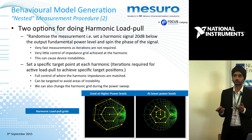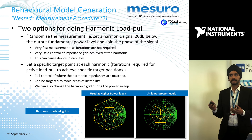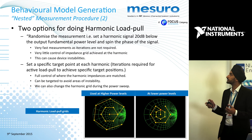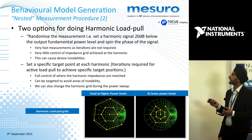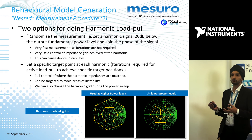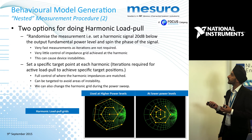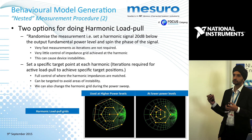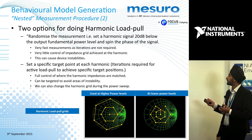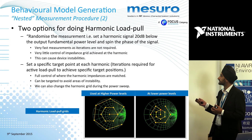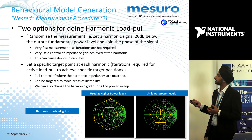We had two options for doing harmonic load pull. The first option was to randomize the measurement: set your fundamental passive tuner to a certain point and let the harmonic set random phases around the Smith chart. This created a problem because we were hitting regions of device instability we could not avoid. So we went to option two: set specific harmonic targets at each harmonic — second and third — and optimize to try and avoid those unstable regions, which were mainly found at lower power levels. At higher power levels we switched to this targeted harmonic load pull.